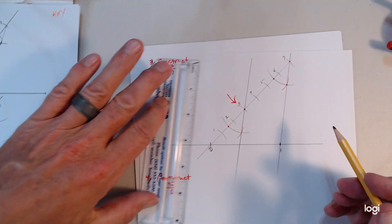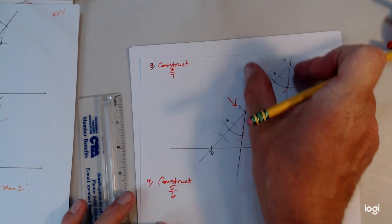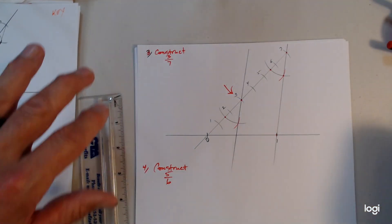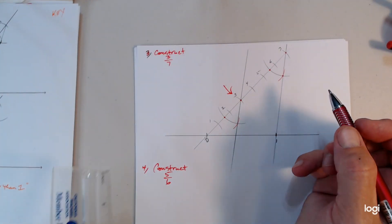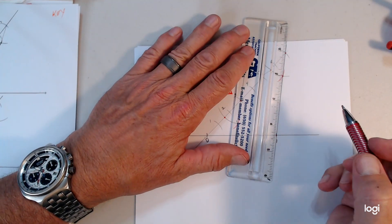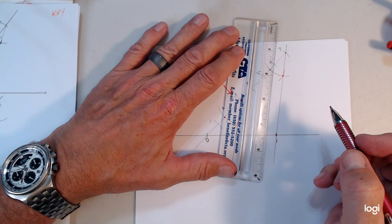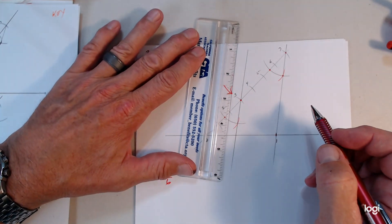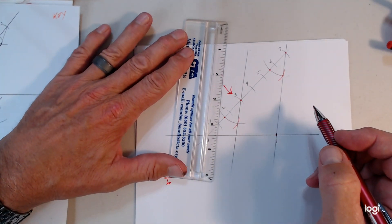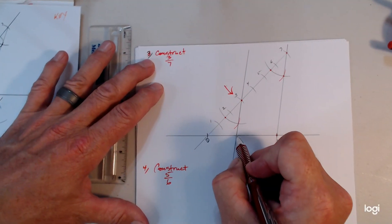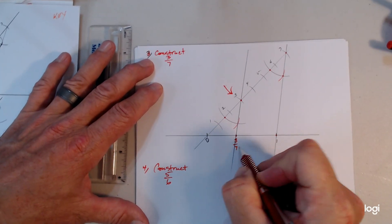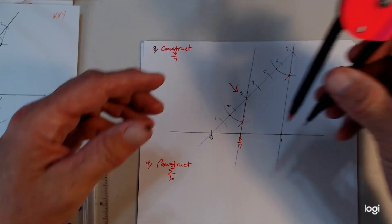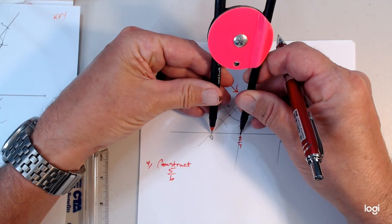If you draw it long, you can see how these lines are parallel. So once again — here's seven-sevenths, six-sevenths, five-sevenths, four-sevenths, three-sevenths, two-sevenths, one-seventh. This is three-sevenths right here. If you want negative three-sevenths — no big deal. You just adjust your compass to three-sevenths and come over here.